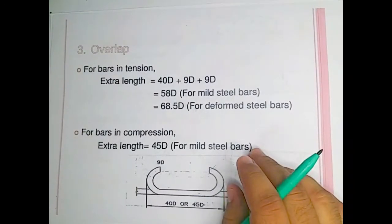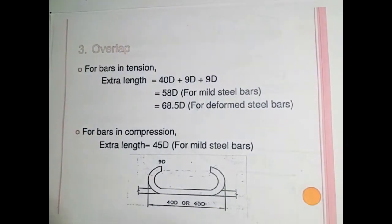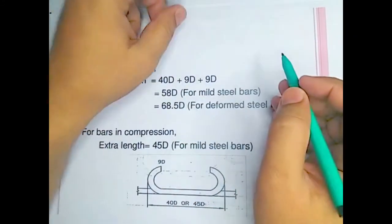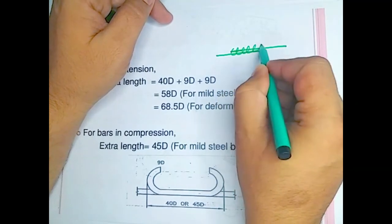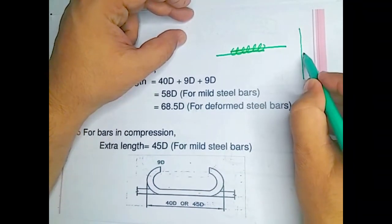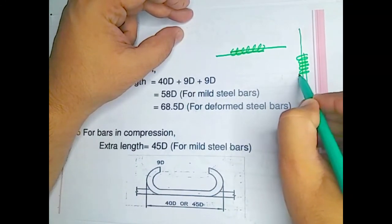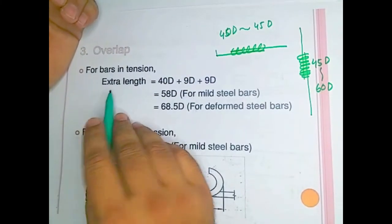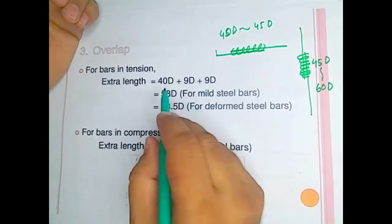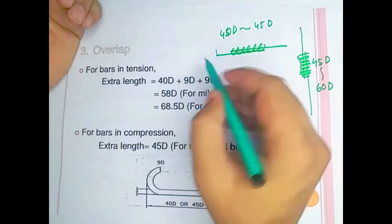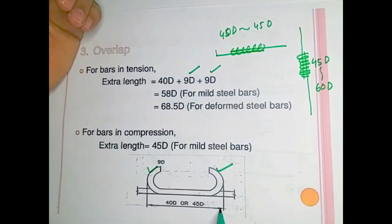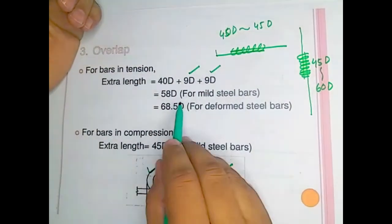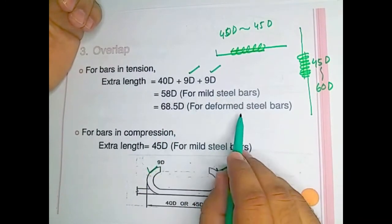Overlapping is of two types: horizontal overlapping and vertical overlapping. For bars in tension, the extra length is equal to 40d plus 90 degree hooks on both sides — one hook on one side and one hook on the other. For mild steel it is 58d, and for deformed steel bar it is 60.5d.